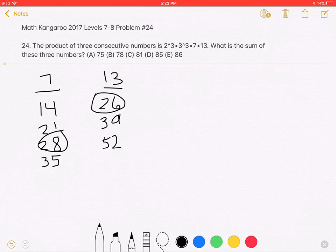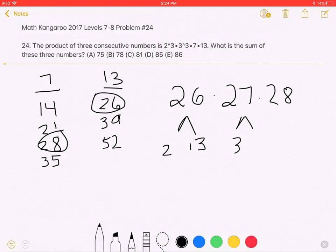We know that the terms must be 26×27×28. 26 is equal to 2×13, 27 is equal to 3³, and 28 is equal to 2²×7.